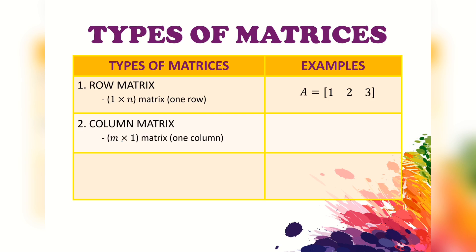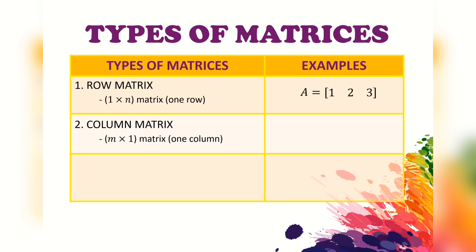The order of a column matrix is m by one. Matrix A has two rows and one column, so the order is two by one, and matrix B is a three by one matrix.